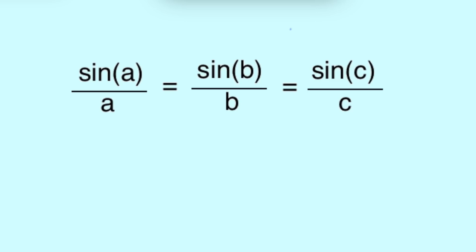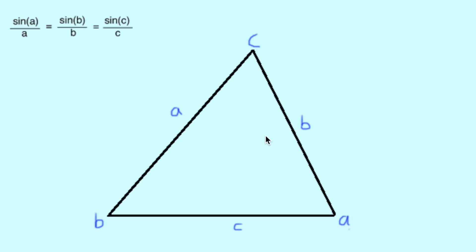Now let's take a look at the sine rule. Here we have the equation sine A over A is equal to sine B over B, which is also equal to sine C over C. Now let's take a look at our triangle to understand what this all means. We have our triangle marked out for us here. We can see our angles A, B and C, as well as our sides labelled A, B and C.